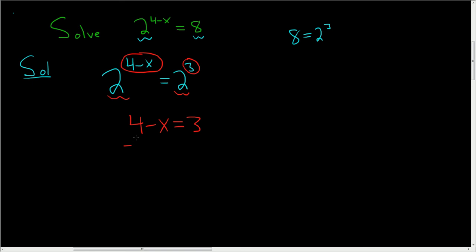To finish, just solve for x. Subtract 4 from both sides. We get minus x equals minus 1. Divide both sides by negative 1, and we end up with x equals 1. And that's it.